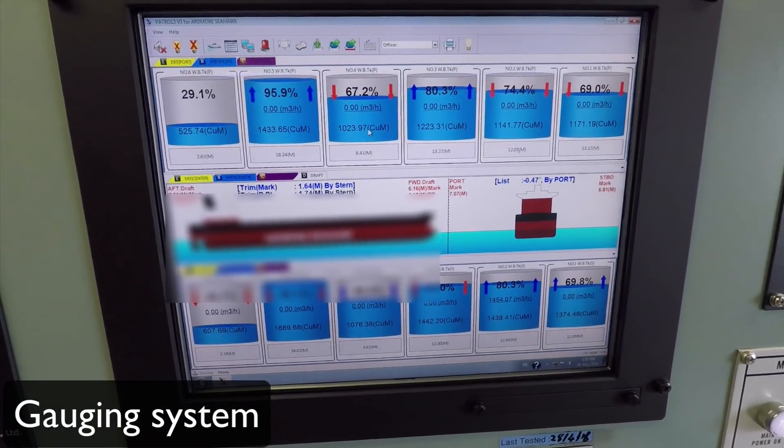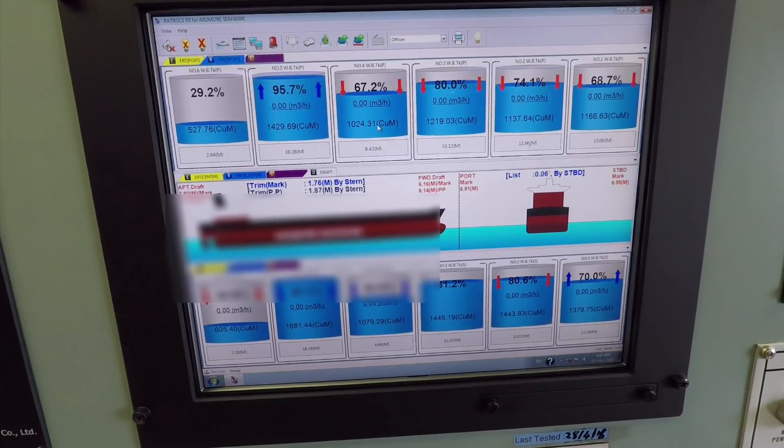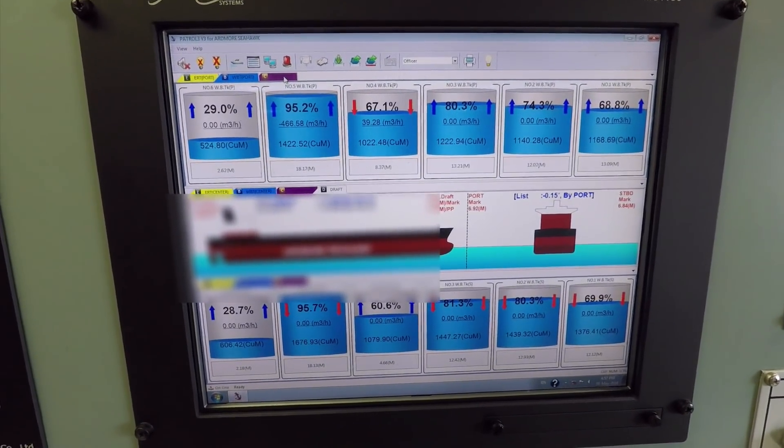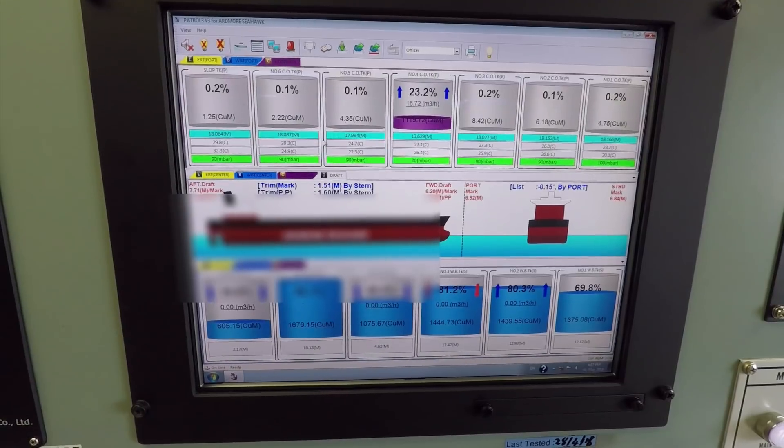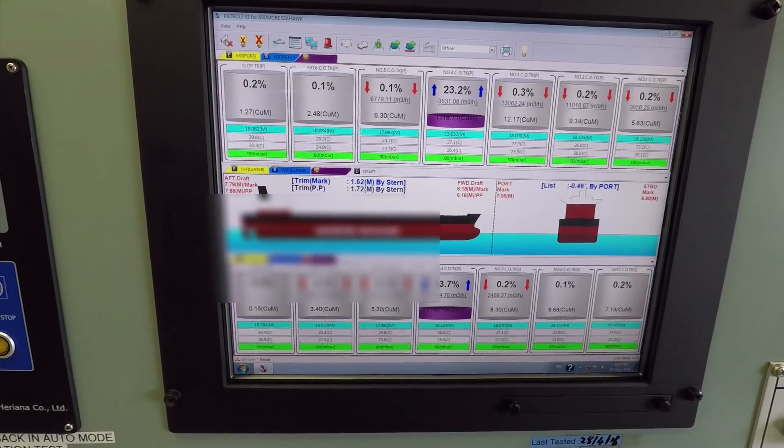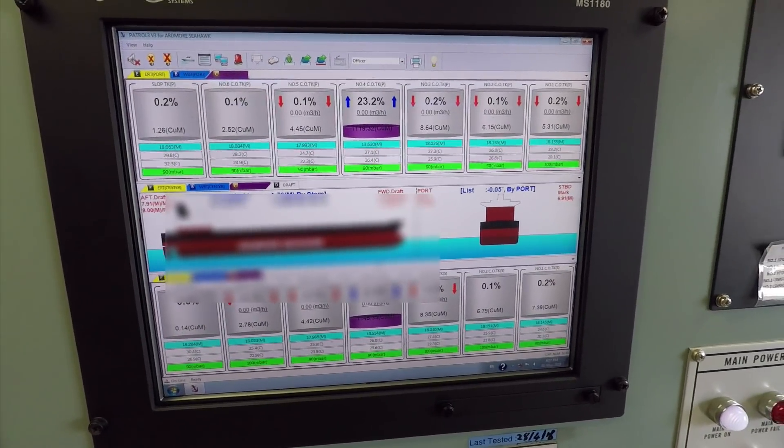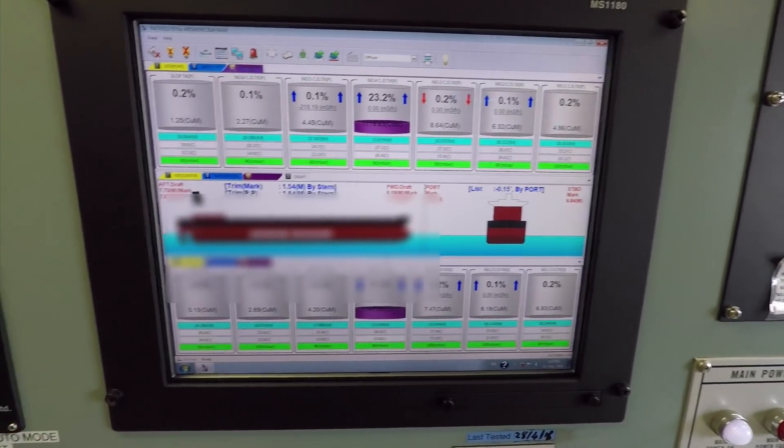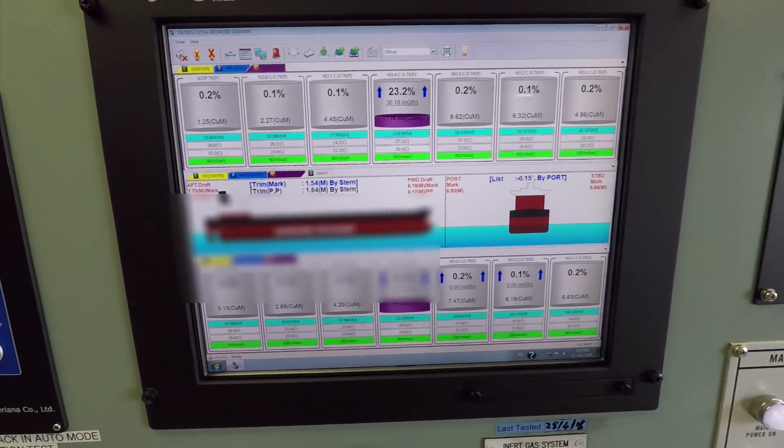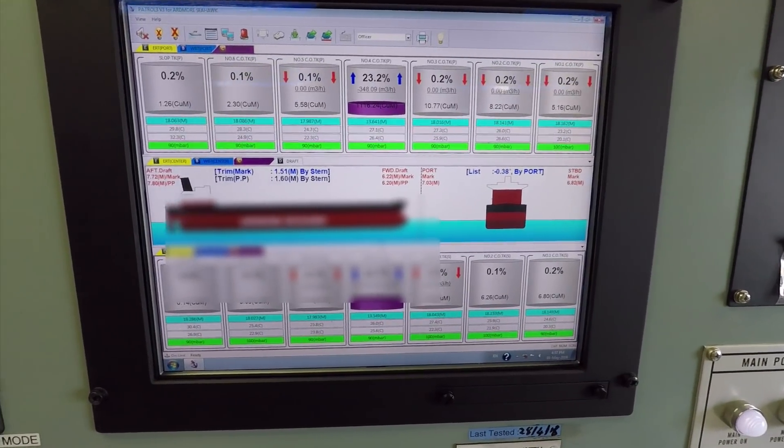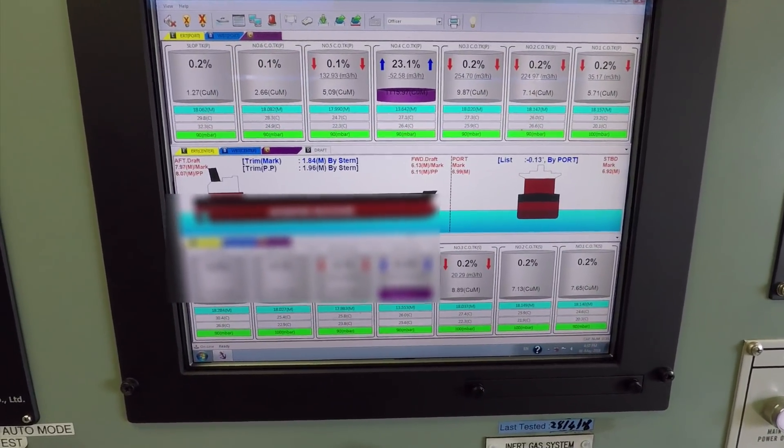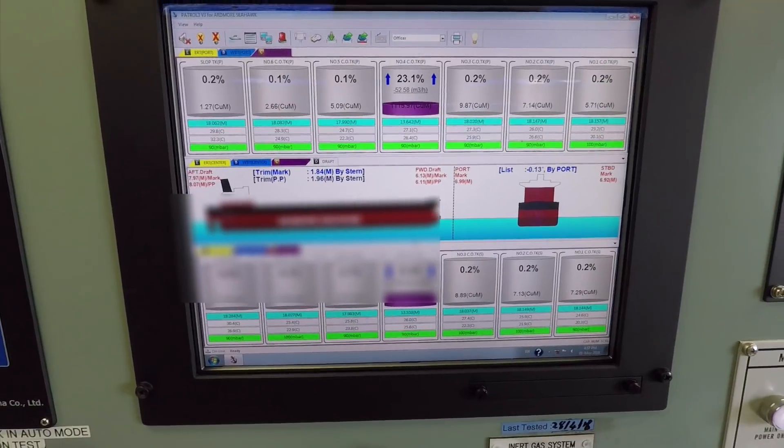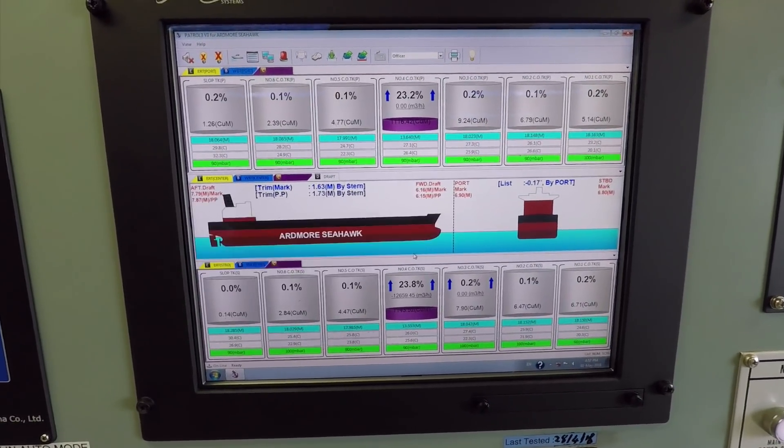And at any given time, he can see entire ship's level, pressure, temperature, all the details along with the draft and trim and list. And a repeater of this screen is also installed on the bridge, so even while at sea, the duty officer can monitor these tanks.